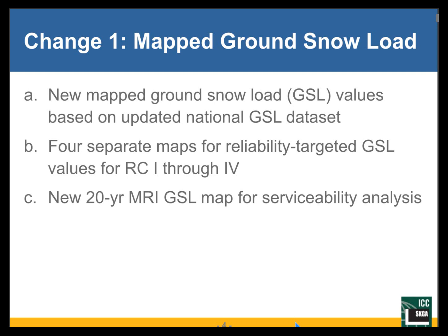The maps are based on an updated national ground snow load data set, and now we have four separate maps. Until ASCE 7-16, we had one ground snow load map. Now we have four separate maps for reliability-targeted ground snow load values for risk categories one through four — one map per risk category. There is also an additional new 20-year mean recurrence interval, or 20-year return period, ground snow load map for serviceability analysis. This one, as you will see later, is a bit problematic.